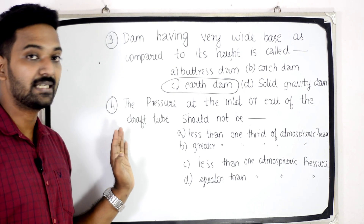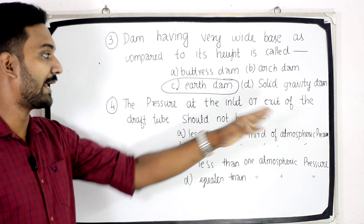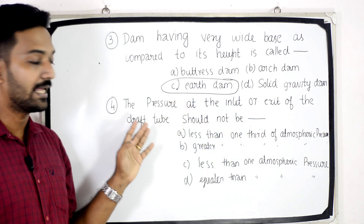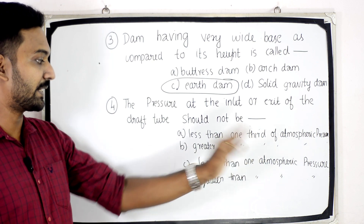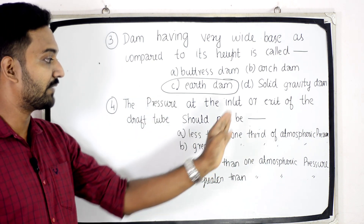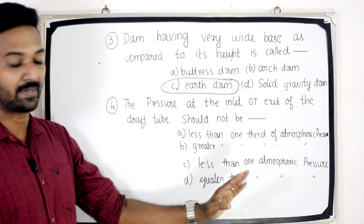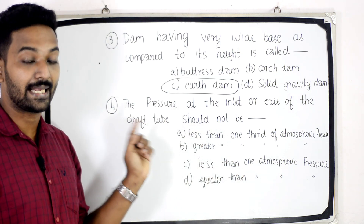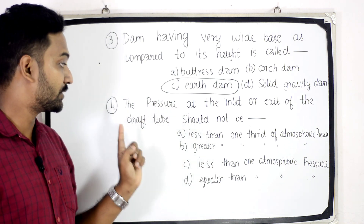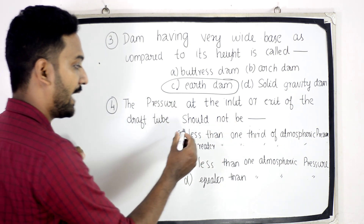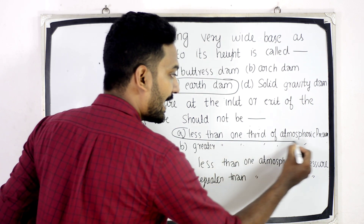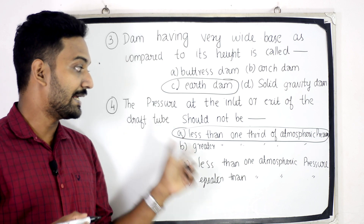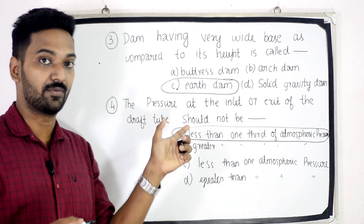Fourth question. The pressure at the inlet or exit of the draft tube should not be — Option A: less than one-third of atmospheric pressure. Option B: greater than one-third of atmospheric pressure. Option C: less than one atmospheric pressure. Option D: greater than one atmospheric pressure. Answer: Option A, less than one-third of atmospheric pressure.